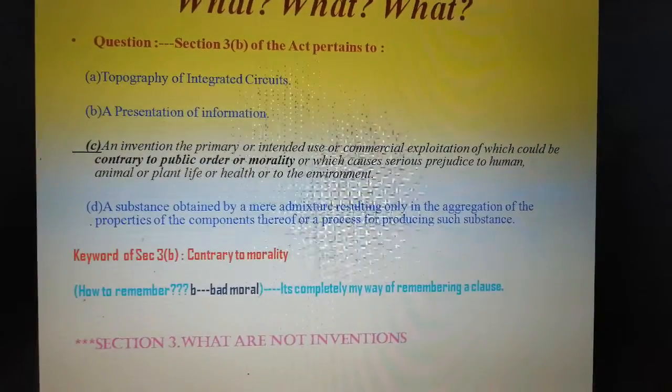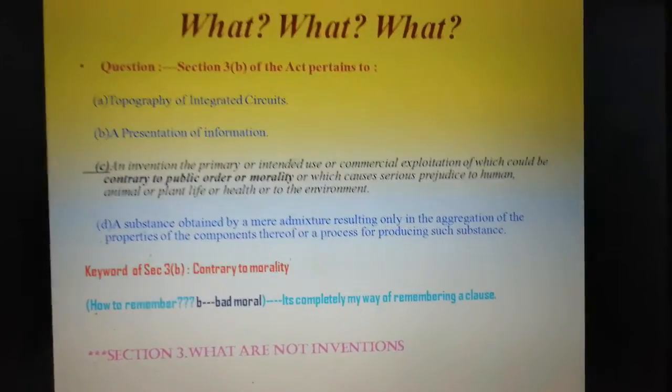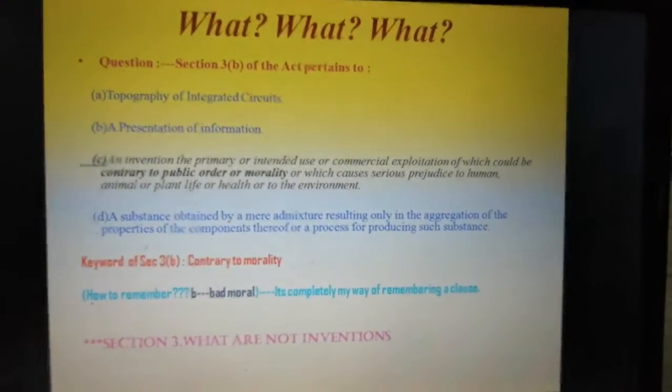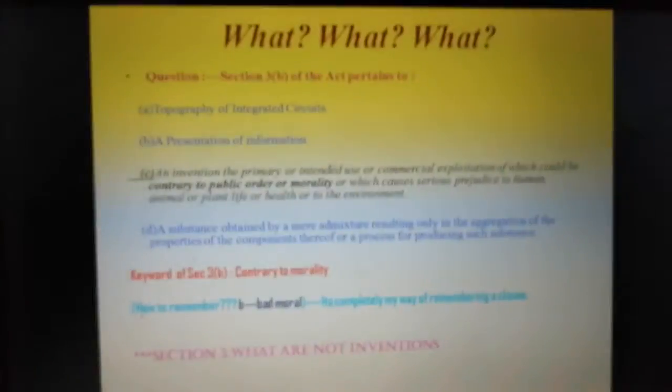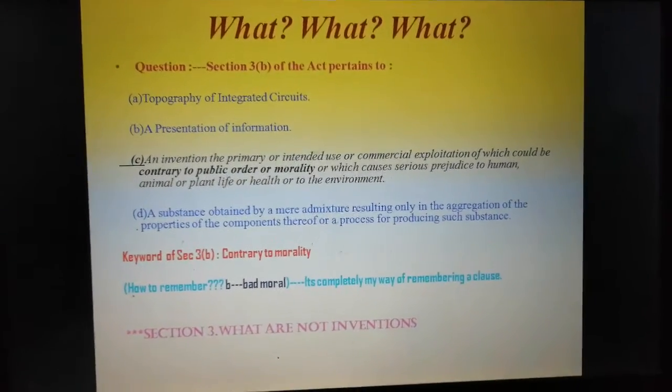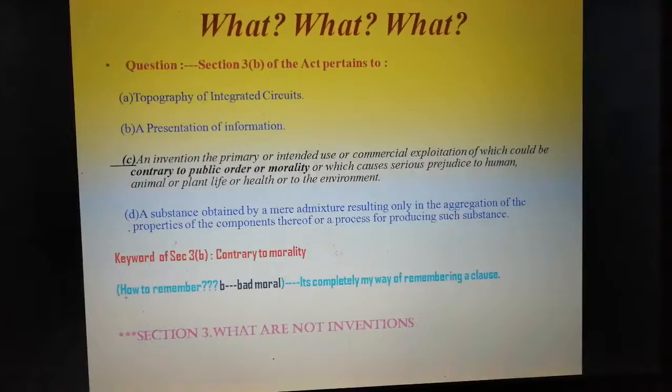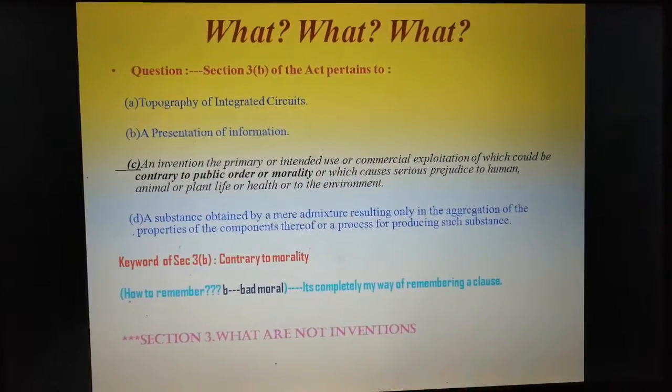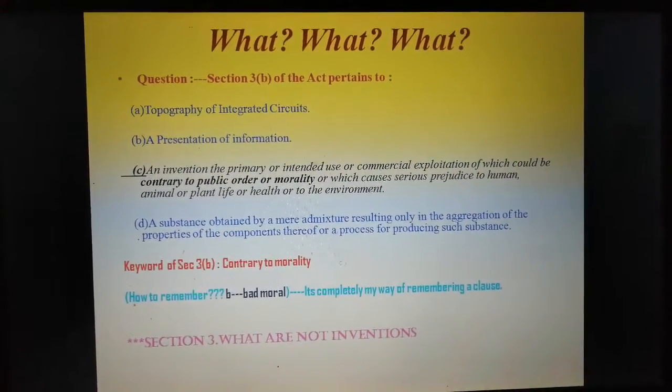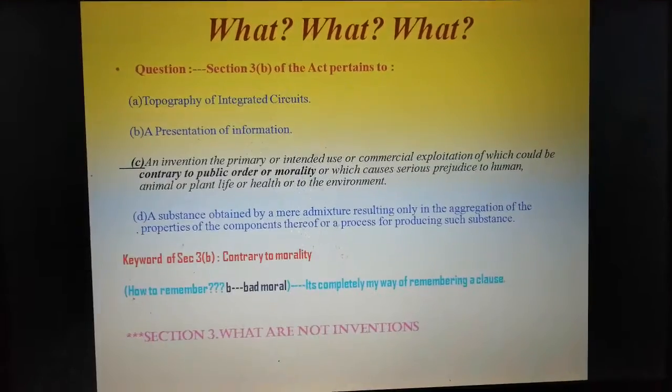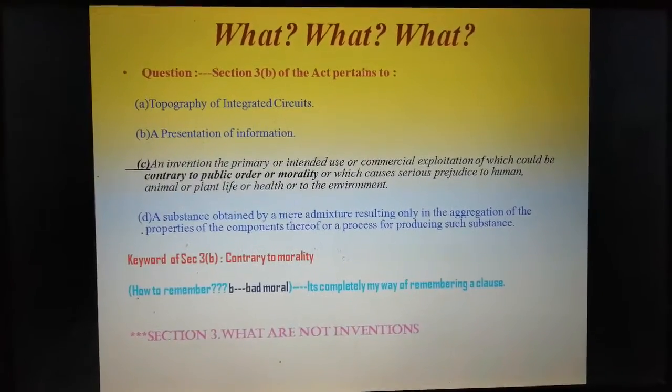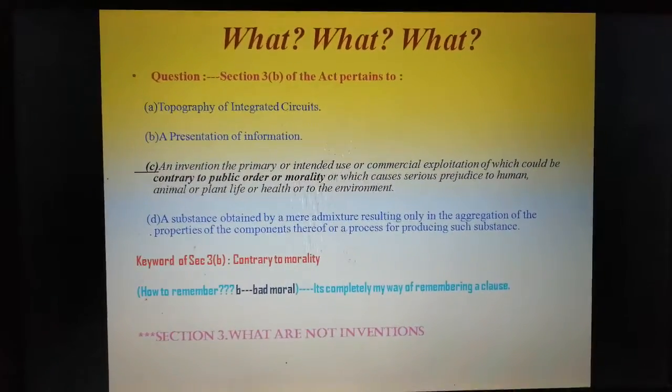Section 3, the title is what are not inventions. Just remember this friends, the title of Section 3 is what are not inventions. And as we know there are a lot of clauses in Section 3, it may cause confusion. So here I have just mentioned this is clause B. If we can remember this as B for bad moral, then we can easily remember it and we will not be confused. This way for all the clauses I will give you some tips or tricks to remember it.